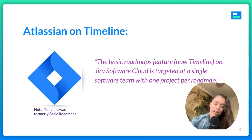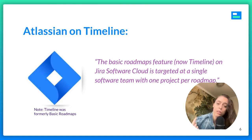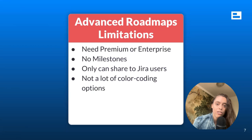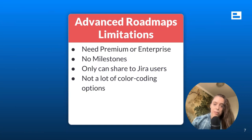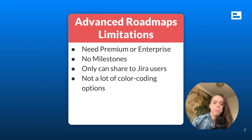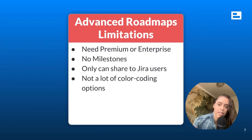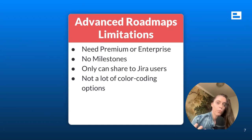Atlassian is very clear about the distinction between these two. The Timeline is targeted at a single software team with one project per roadmap, so that's obviously not what we need for an Epic Roadmap. Advanced Roadmaps is available if you have that Premium or Enterprise level, but if you don't, your entire organization would need to upgrade — you can't just have a couple of people upgrade. Everyone needs to upgrade, so it can be costly.